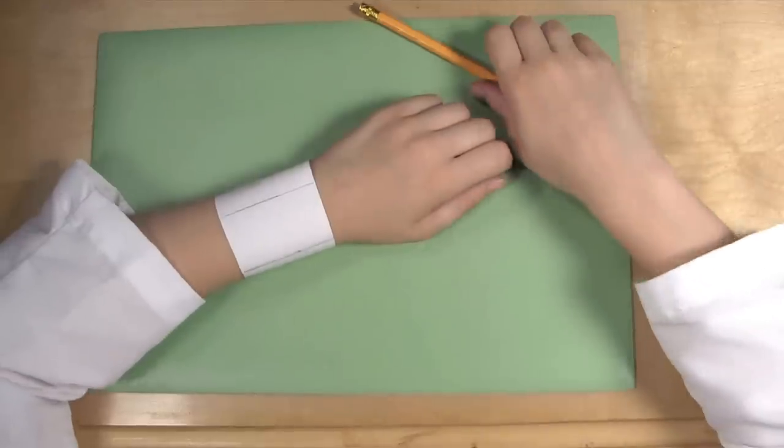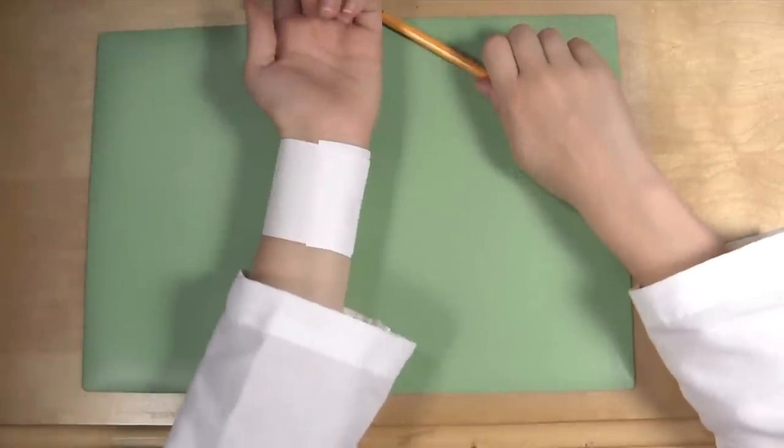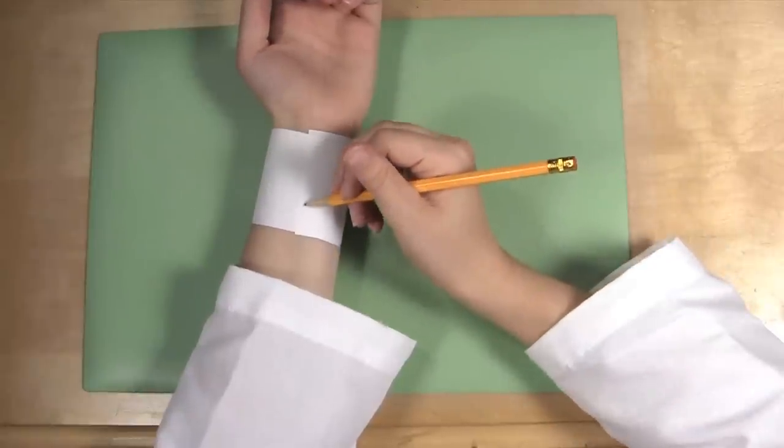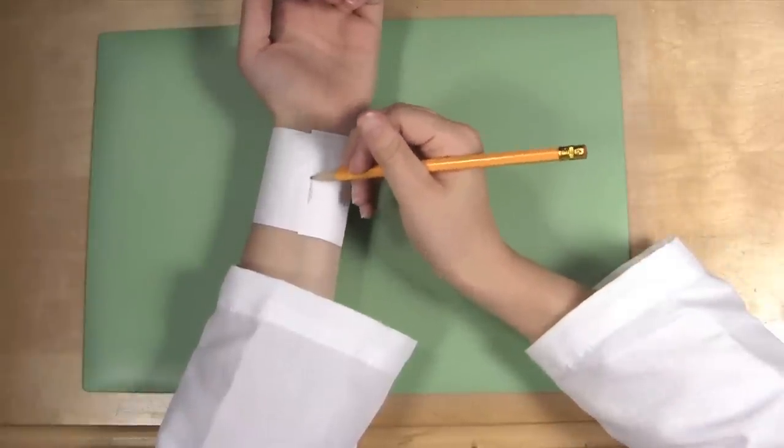When the paper watch is secured, flip your arm so your palm is facing up and draw a line down the paper in the middle of your wrist to mark where the clasp would go.